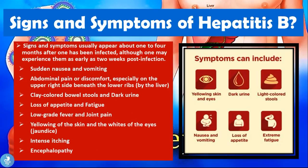Signs and symptoms usually appear about one to four months after infection, although they may appear as early as two weeks post-infection. Symptoms include sudden nausea and vomiting, abdominal pain or discomfort especially on the upper right side beneath the lower ribs where the liver is located, clay-colored bowel stools and dark urine, loss of appetite and fatigue, low-grade fever and joint pain, yellowing of the skin and whites of the eyes (jaundice), intense itching, and encephalopathy.